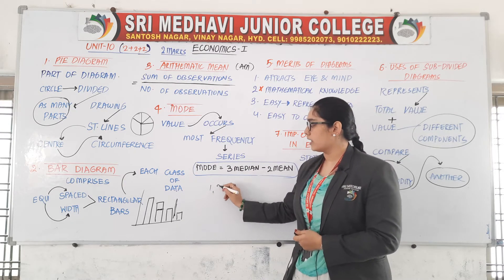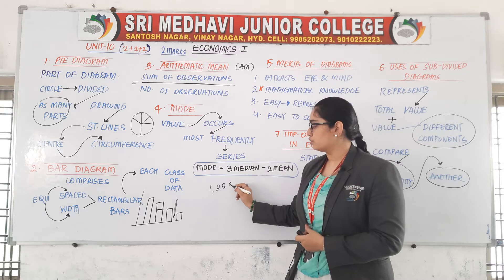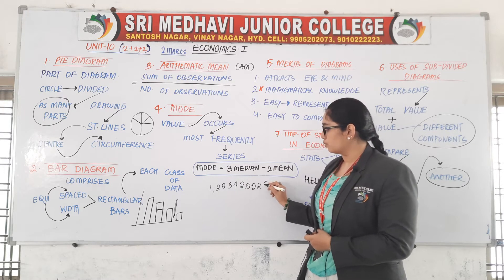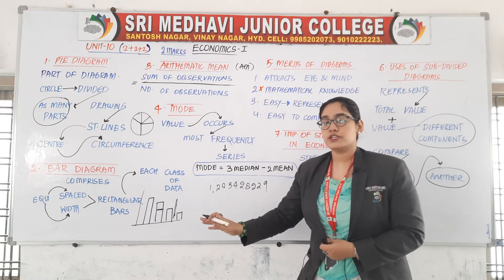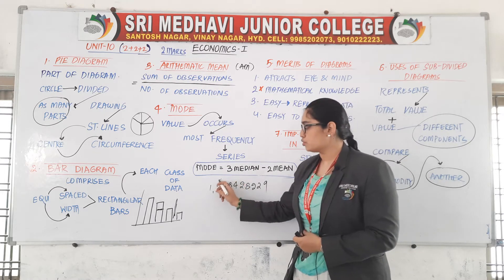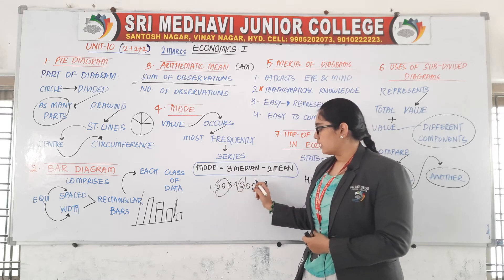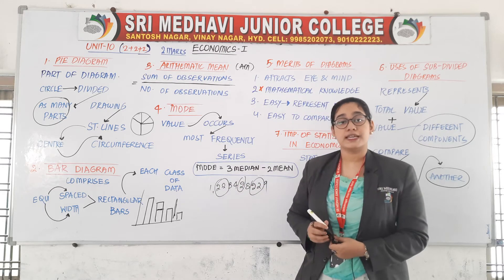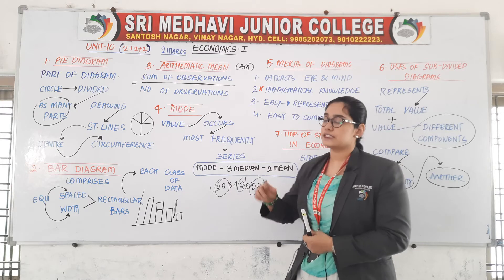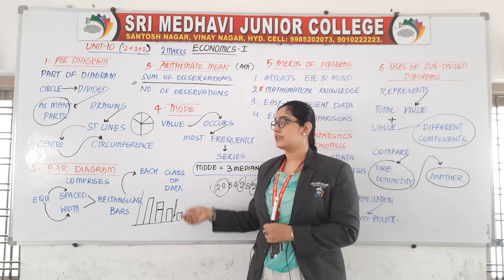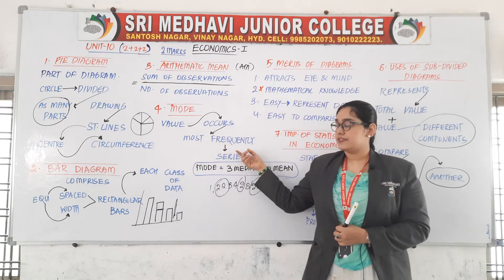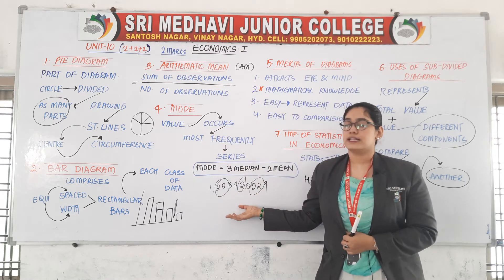For example, if I write the series: 1, 2, 2, 3, 4, 2, 8, 2, 2, 9 — then which number is repeating the most? Number 2 is repeating the most number of times. Hence the mode of the given series is 2. So the value which is occurring most frequently in a series is nothing but mode.